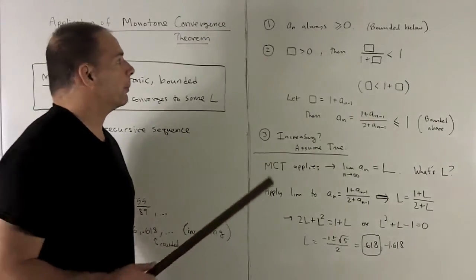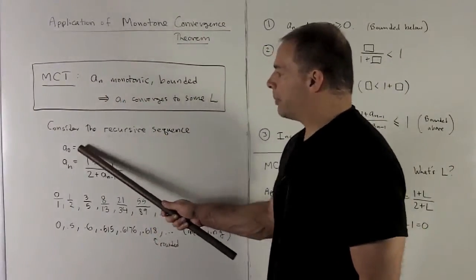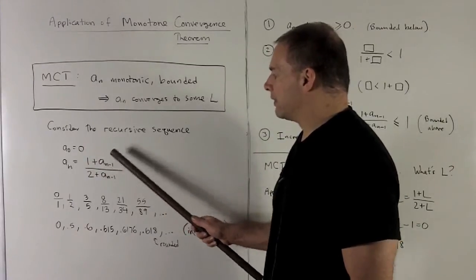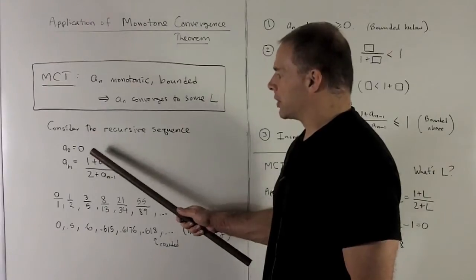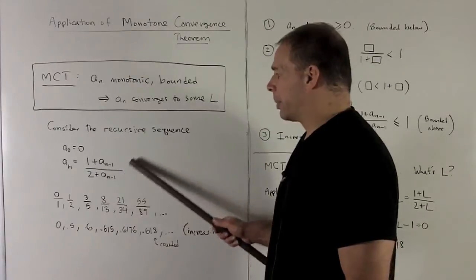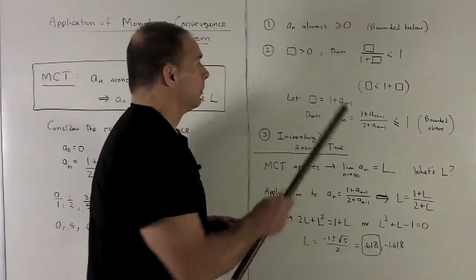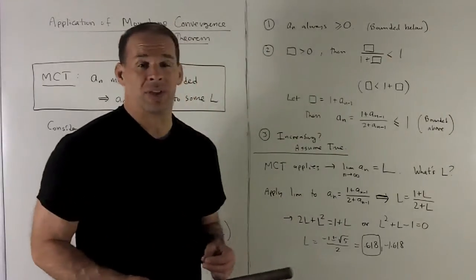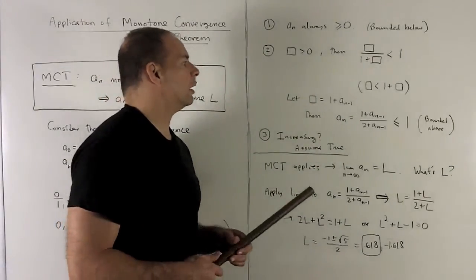Bounded we can do. First off, notice, since once we get past 0, we're always putting positive numbers into our a_n. That means positive plus 1, positive plus 2, positive over positive gives me another positive number. So our a_n's are always going to be greater than or equal to 0. So that says I'm bounded from below by 0.